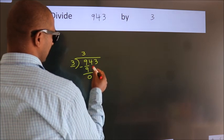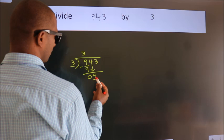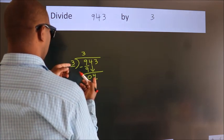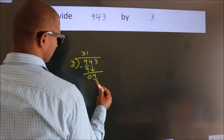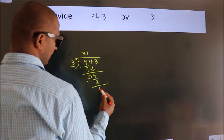After this, bring down the next number. So, 4 down. A number close to 4 in the 3 table is 3 once, which is 3. Now we subtract. We get 1.